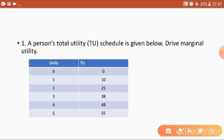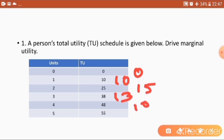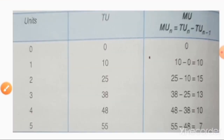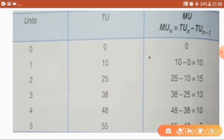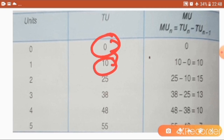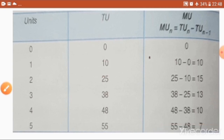So our total marginal utility values derived are: 0 for the first unit, 10 for the second, 15 for the third, 13 for the fourth, 10 for the fifth, and 7 for the sixth. The formula is simply the difference between the nth term TU and the TU_(n−1) term. This is the way to find out marginal utility.